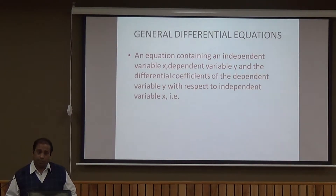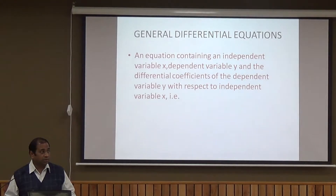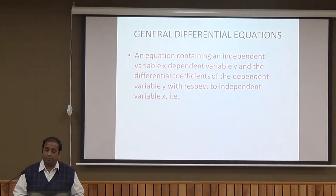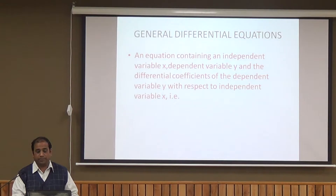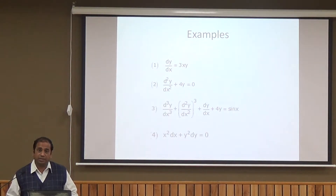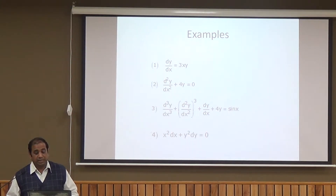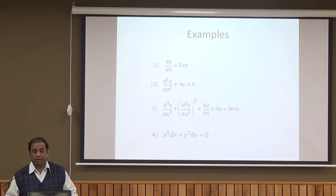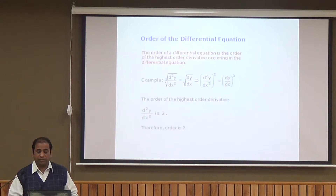The definition of a differential equation: it is an equation containing an independent variable x, a dependent variable y, and the differential coefficients of dependent variable y with respect to independent variable x. This expression is known as a differential equation. For example: dy/dx = 3xy; d²y/dx² + 4y = 0; d³y/dx³ + (d²y/dx²)² + dy/dx + 4y = sin x; and x² dx + y² dy = 0.